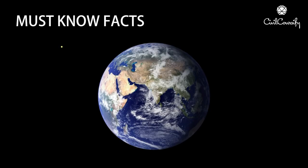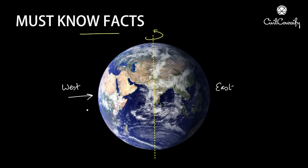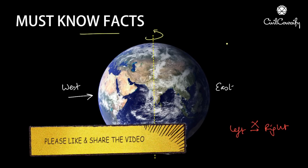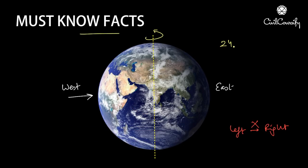Before we discuss the Coriolis effect and the direction and deflection of winds on our planet, there are some facts you must know. First of all, the Earth rotates on its own axis and this rotation is from west to east. This rotation is not described as left to right because left and right depend on your own perspective — if two people are facing each other, their left and right would not be the same. Hence we say the Earth rotates from west to east, and it takes 24 hours for one complete rotation.